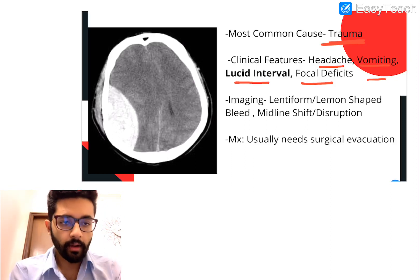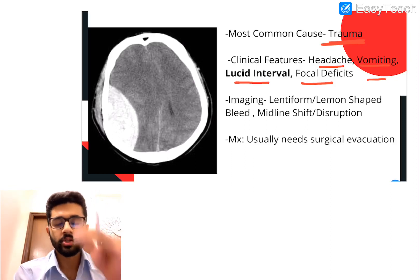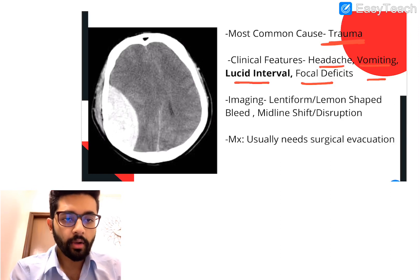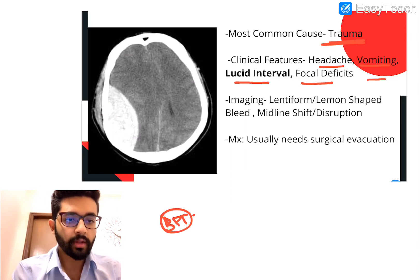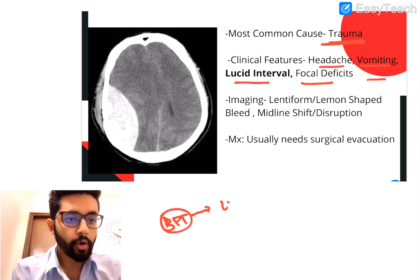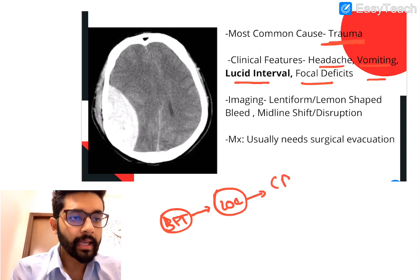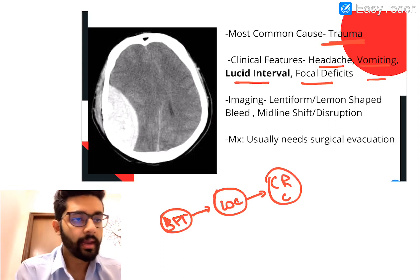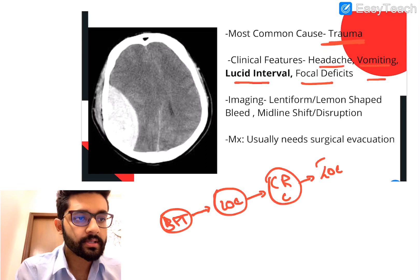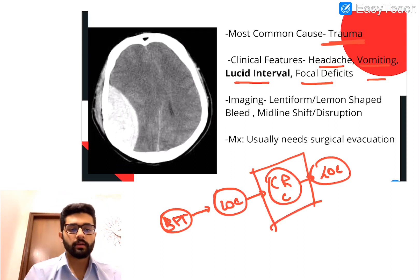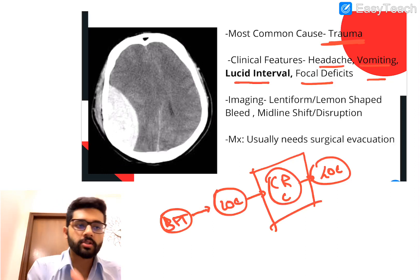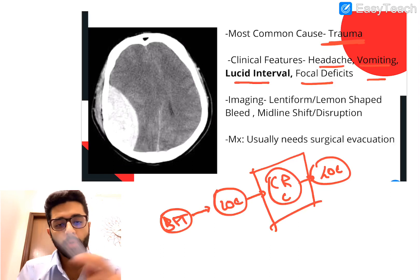The classical EDH presentation is: a patient receives a blunt force blow to the lateral skull — maybe even a road traffic accident — followed by a brief bout of loss of consciousness. The patient then completely regains consciousness, 100% back to normal. Then after a while, as the bleed progresses, they again lose consciousness. That interval of complete consciousness between two periods of unconsciousness is called the lucid interval.